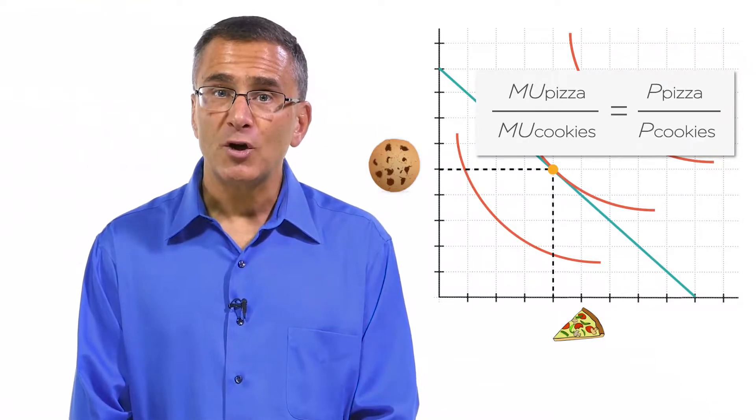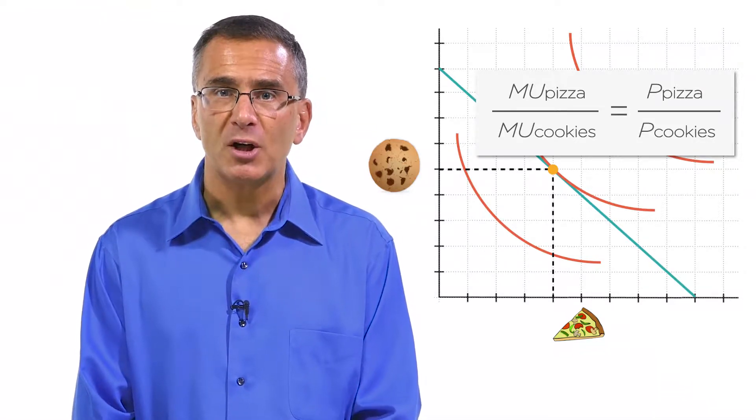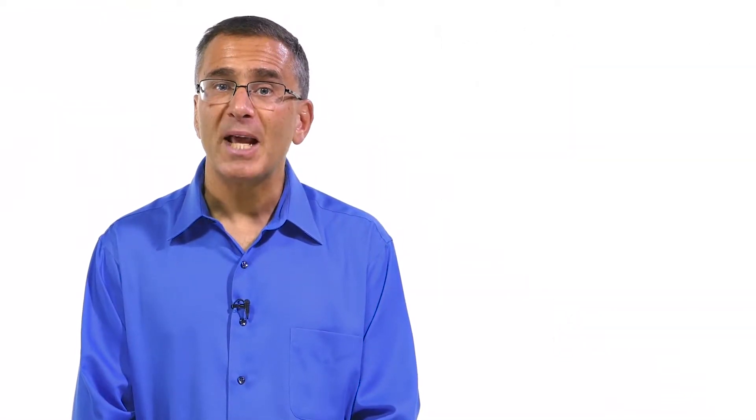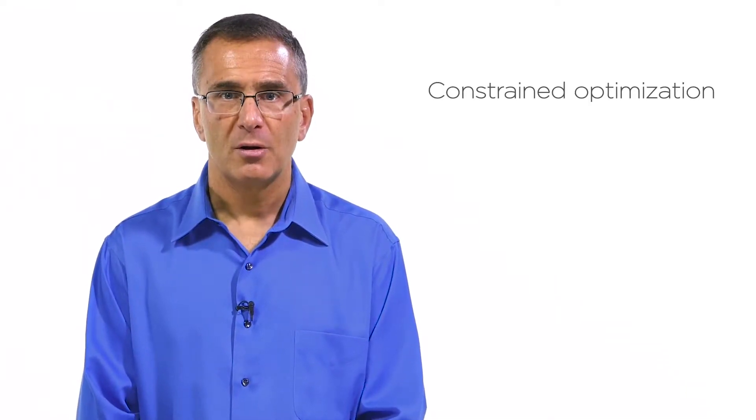Just like when an individual is deciding how many pizzas and cookies to buy given a limited budget, an individual choosing how many hours to work is an exercise in constrained optimization. With this choice, the individual also has a budget constraint. But instead of a budget of a certain number of dollars, she has a budget of a certain amount of time. There's only so many hours in the day, and she can either use them to relax with some leisure time or go to work and make money to fund her consumption.